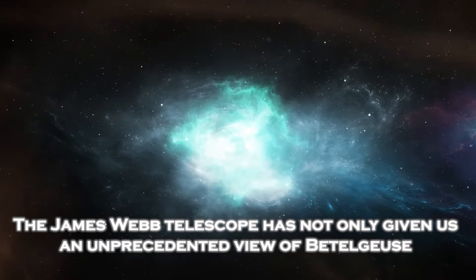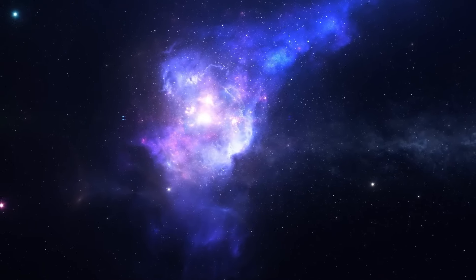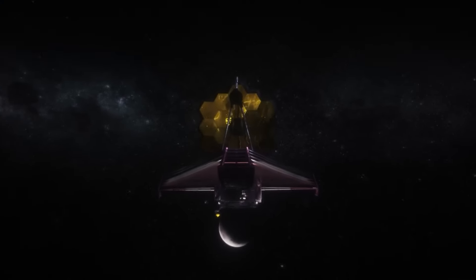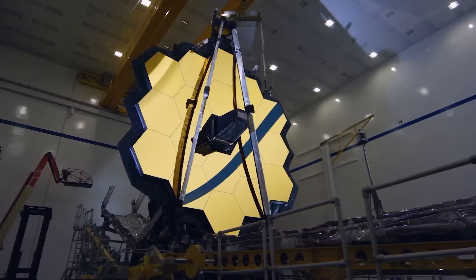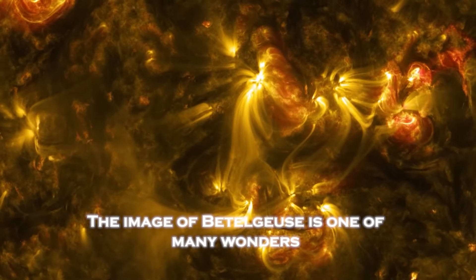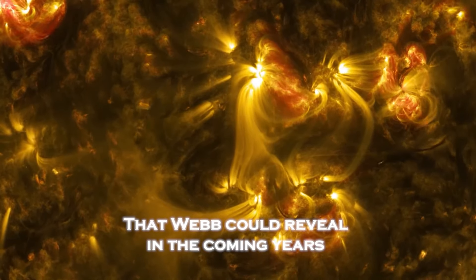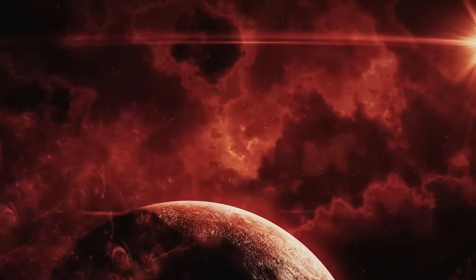The James Webb telescope has not only given us an unprecedented view of Betelgeuse, its mission is just beginning. From distant galaxies to potentially habitable planets, the James Webb is designed to look farther than we have ever reached. What it has captured so far is just the beginning of a revolution in astronomy. The image of Betelgeuse is one of many wonders that the Webb could reveal in the coming years. From star formation to the search for life, each observation represents an opportunity to unlock the deepest secrets of the universe.